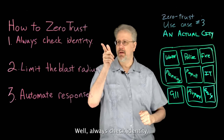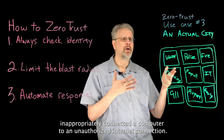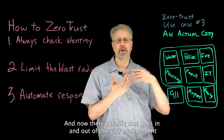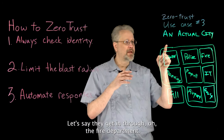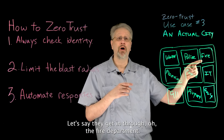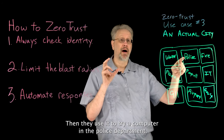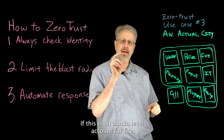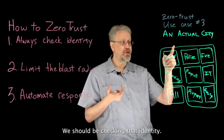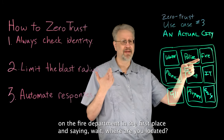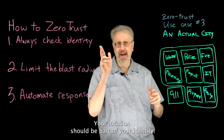The problem is we need to do a better job of limiting blast radius around these other departments. Always check identity. Let's say an attacker gets into one of these systems — someone in a department inappropriately connected a computer to an unauthorized internet connection, so traffic goes in and out of this city environment without passing through a firewall or proxy server. They get in through the fire department, get an account with admin access there, then try to use it in the police department. If this is an admin-level account for fire, do they really need access to police resources? The answer is typically no. We should be checking that identity — checking where you are located, where you are coming in from. If you're not coming in from inside, we need to shut that down. Your location should be part of your identity.